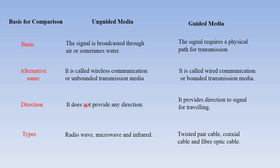First, the basics. In unguided media, signals are broadcasted through the air, or sometimes water. It means we are transmitting signals in the form of a wireless connection — there is no physical connection between two devices. In guided media, signals require a physical path for transmission, meaning they require wires.